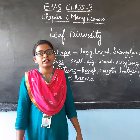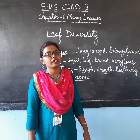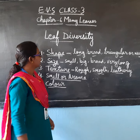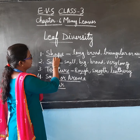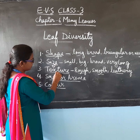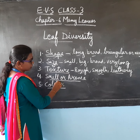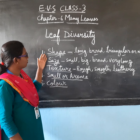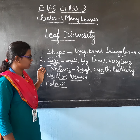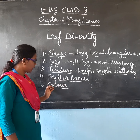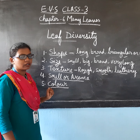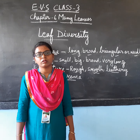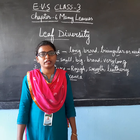So children, in this video we learned about leaf diversity — that is, leaves of different shapes, sizes, texture, smell or aroma, and color. Leaves are of different shapes, size, texture, smell or aroma, and color. In the next video, I will explain you about the uses of leaves.